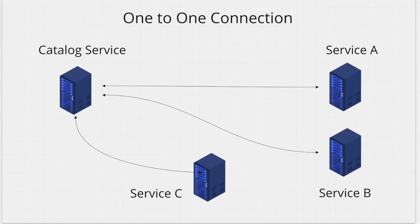Now let's look at how many connections we need if we are using HTTP communication to talk to other services. For every pair of services that want to talk, we need one connection between the two. So in a system with many microservices, you'll end up with a ton of connections — every service needs to be connected to every other service that it wants to talk to.